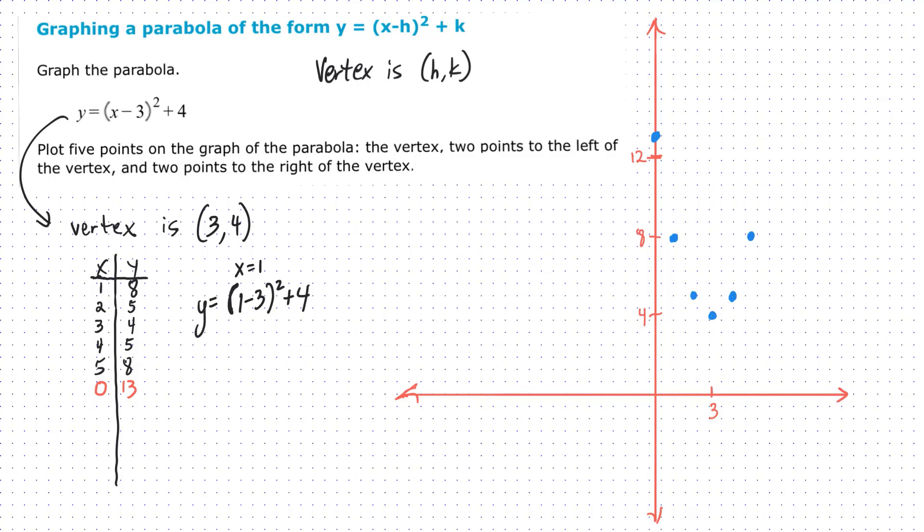We can actually create a symmetric point. Our symmetric point would be what? Six, comma, six, comma, 13. Whoa, six, comma, 13. We'll plot another point over here.